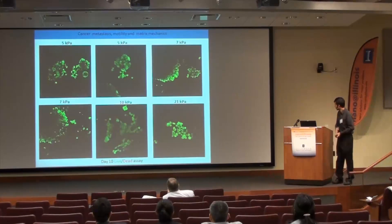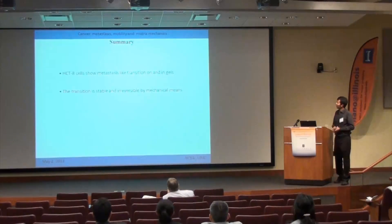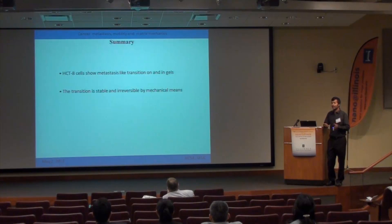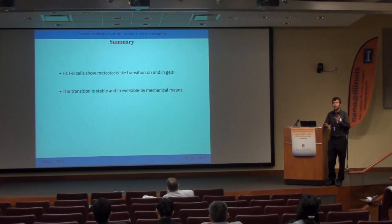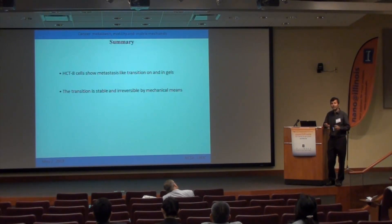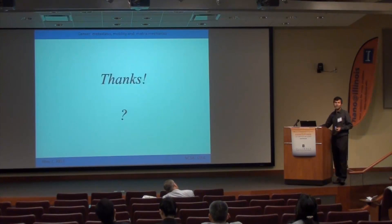To summarize: human colon carcinoma cells show this metastatic-like transition on and in gels. The results not shown for time constraints indicate that this transition is irreversible — when these R cells are replated on any stiffness gel or hard glass, they retain their rounded morphology stably and irreversibly.